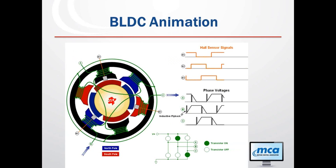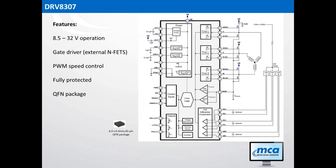An example driver for this technique is the DRV8307 — an integrated driver with built-in hall comparators for direct interface to external hall sensors. The transistors are external to the IC, making it a pre-driver that gives you flexibility to size those transistors based on your application. It's fully protected, with an external sense resistor for current measurement, and comes in a small 6x6 QFIN package. Ross will go into a design using this device in his following slides.